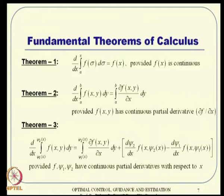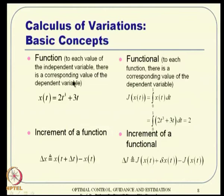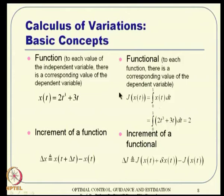What is the difference between calculus and calculus of variations? In calculus, we talk about functions — to each value of the independent variable, there is a corresponding value of the dependent variable. In calculus of variations, we talk about functionals — to each function, there is a corresponding value of the dependent variable. J is a function of x(t), but x itself is a function of t. That kind of thing is called a functional, and these functionals are typically scalar values after integration.